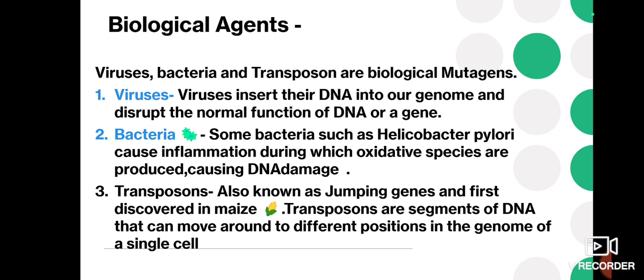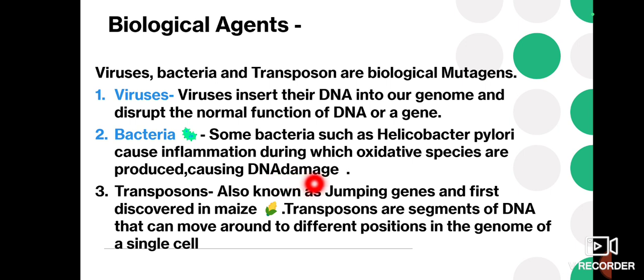Some bacteria such as Helicobacter pylori cause inflammation during which oxidative species are produced, causing DNA damage. Bacteria therefore also affect the process of DNA replication.